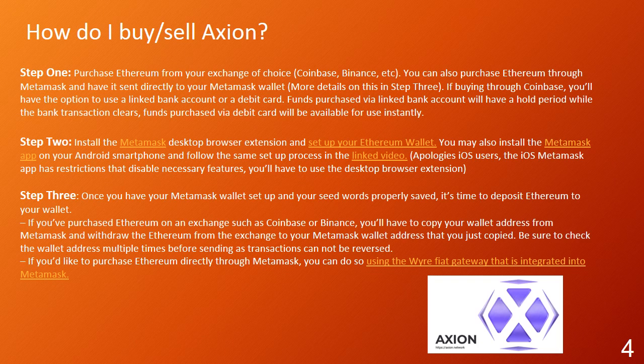How do I buy and sell Axion? Step 1: Purchase Ethereum from your exchange of choice — Coinbase, Binance, etc. You can also purchase Ethereum through Metamask and have it sent directly to your Metamask wallet. More details on this in Step 3. If buying through Coinbase, you'll have the option to use a linked bank account or a debit card. Funds purchased via linked bank account will have a hold period while the bank transaction clears. Funds purchased via debit card will be available for use instantly.